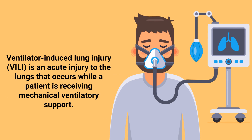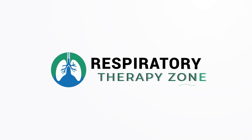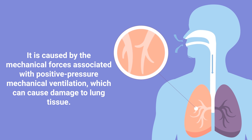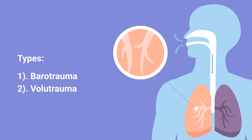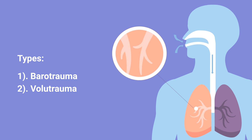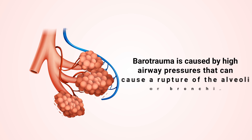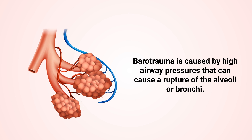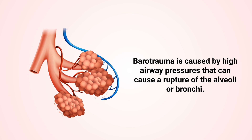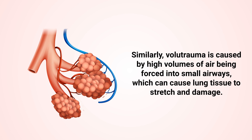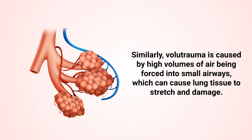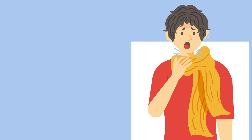Ventilator-induced lung injury is an acute injury to the lungs that occurs while a patient is receiving mechanical ventilatory support. It is caused by the mechanical forces associated with positive pressure mechanical ventilation. The two types include barotrauma and volutrauma. Barotrauma is caused by high airway pressures that can cause a rupture of the alveoli or bronchi. Similarly, volutrauma is caused by high volumes of air being forced into small airways, which can cause lung tissue to stretch and become damaged.